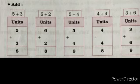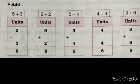Now children, take your 5 fingers and 4 fingers. Count all fingers — it will become 9. So write answer 9. Next, 4 fingers plus 4 fingers — how many fingers become? Yes, 8. So write 8. Now children, 3 fingers plus 6 fingers — how many does it become? Total 9. So write answer 9.